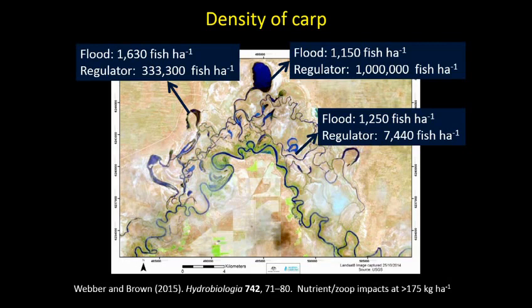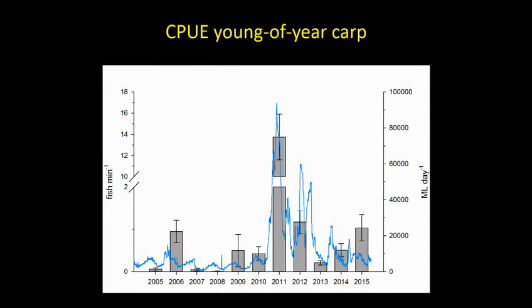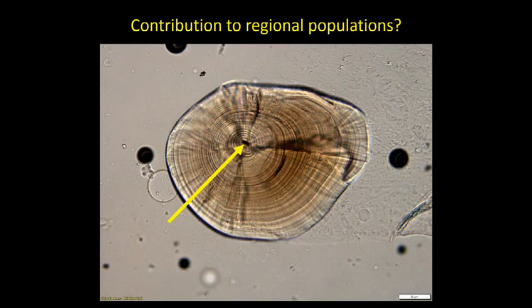Do these young-of-year carp recruit into older age groups? Normally at Chowla we see increases in young-of-year recruitment after high in-channel flow events or floods, and very little during low flow periods. In 2015, after the regulator event, we have a low flow period but higher abundances of young-of-year carp. We're also wondering whether these fish disperse to other areas, and we're investigating this using otoliths — the ear bones of fish — to find a chemical fingerprint for the Chowla region, then catching carp elsewhere to see if they carry that Chowla fingerprint.